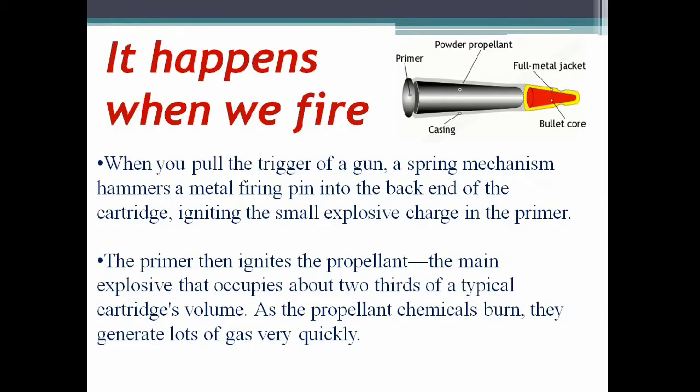When you pull the trigger of a gun, a spring mechanism hammers a metal firing pin into the back end of the cartridge, igniting the small explosive charge in the primer. The primer then ignites the propellant — the main explosive that occupies about two-thirds of a typical cartridge volume. As the propellant chemicals burn, they generate a large amount of gas very quickly.